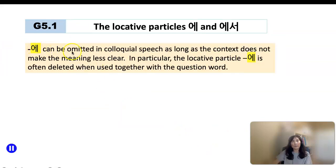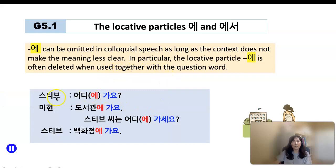This locative particle can be omitted in colloquial speech as long as context does not make the meaning less clear. In particular, the locative particle 에 is often omitted when used together with a question word. Here's an example. So let's say someone is asking, where are you going? And notice that 에 is attached to the question word where, 어디. 어디에 가요? Where are you going? 어디 가요? So often times this 에 is omitted. 어디 가요? 도서관에 가요. So notice that when you use this verb 가다, you attach 에 to the destination. 도서관에 가요. 어디 가요? 백화점에 가요. I'm going to a department store.